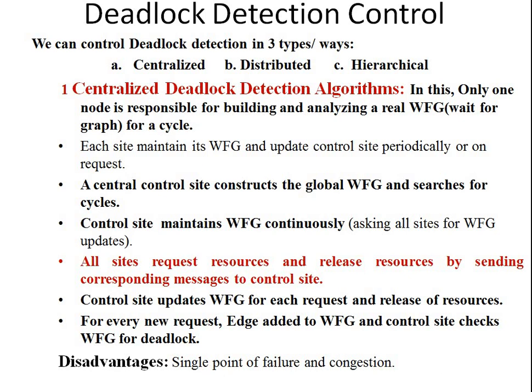In a distributed system, all work happens in message form, communicated by sending messages. The main drawback of centralized detection is: suppose the governing node fails, then the system fails. The most important and worst-case issue is the single point of failure and congestion.